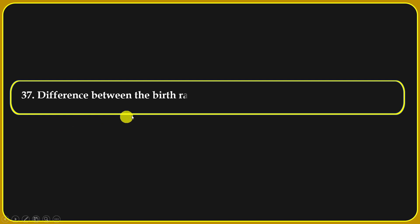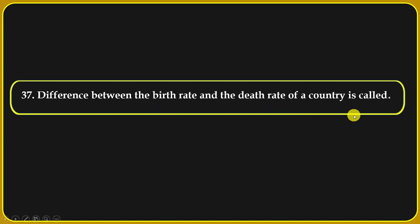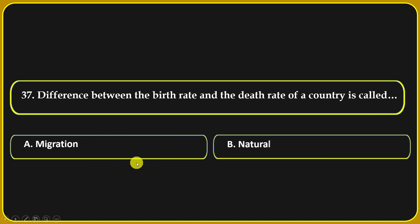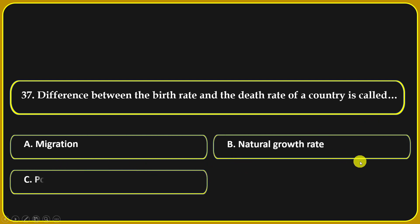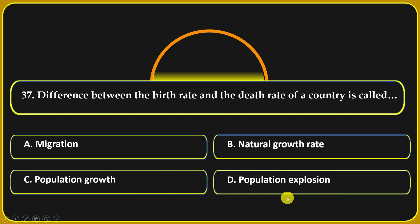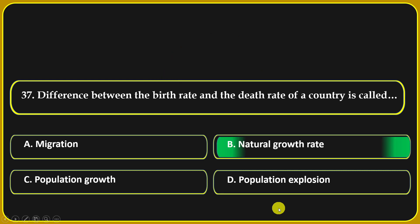The difference between the birth rate and the death rate of a country is called: migration, natural growth rate, population growth, or population expression. Natural growth rate is the correct answer.